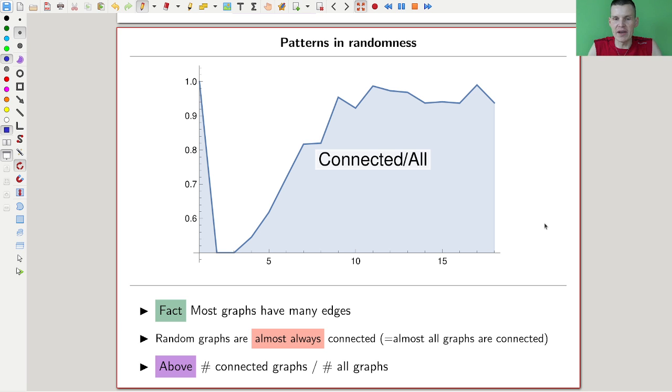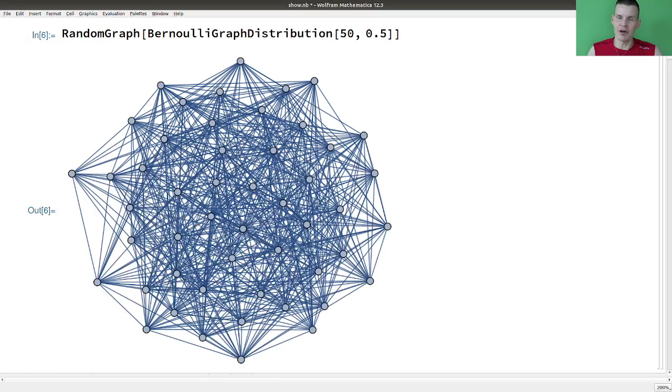Similar to prime numbers, graphs look like noise. So here's something you can actually prove about patterns and randomness, about almost all graphs: random graphs are almost always connected. Here I have the number of connected graphs versus all graphs. It's essentially 100% around 16, 17, 18 vertices. With 18 vertices, essentially 100%. So almost all graphs are actually connected.